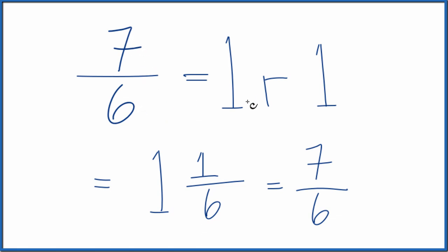So to recap, we divided 7 by 6. We got 1 remainder 1. This, our whole number, it goes here. The remainder becomes the numerator. And we take that original denominator, put it down here.